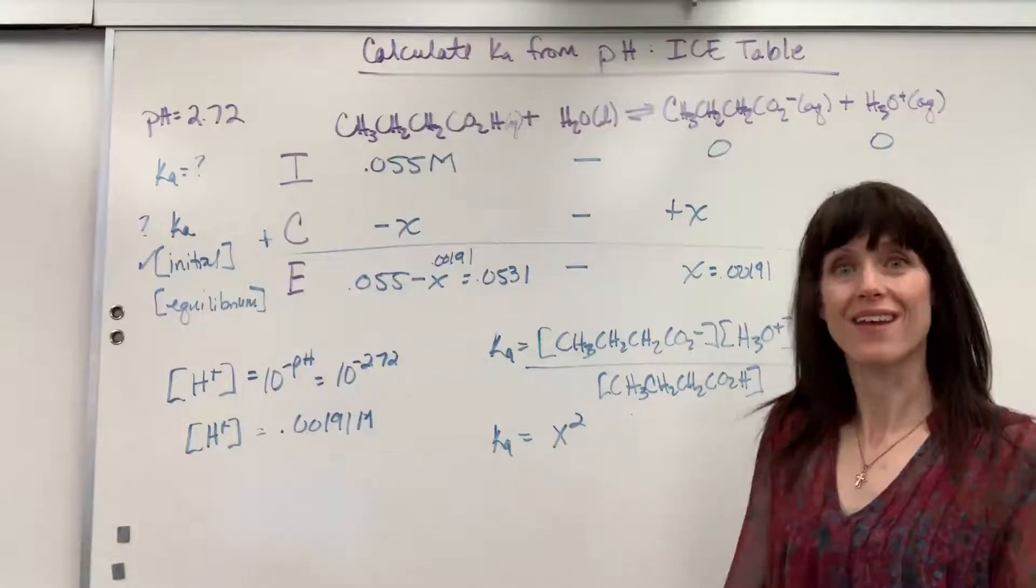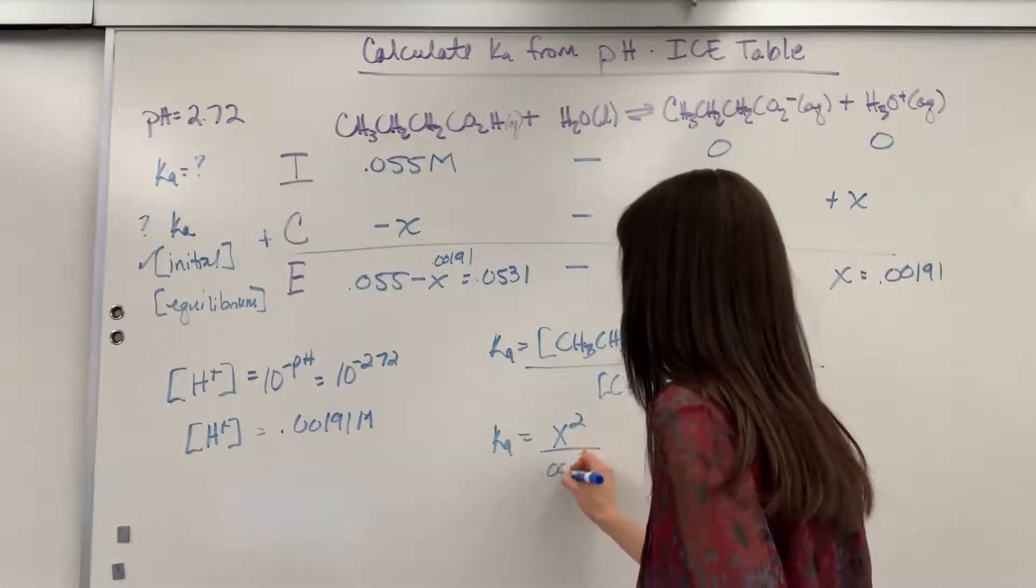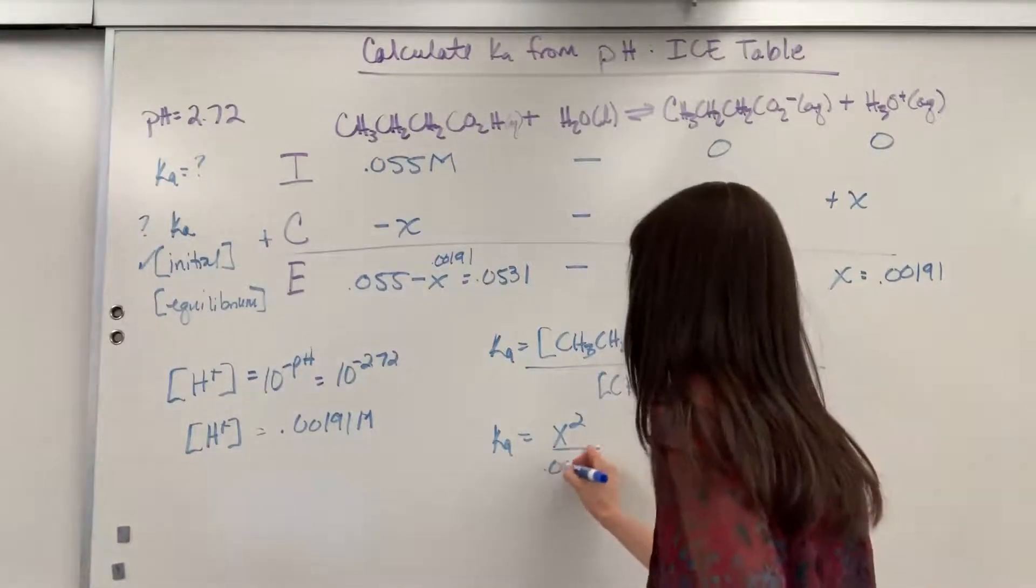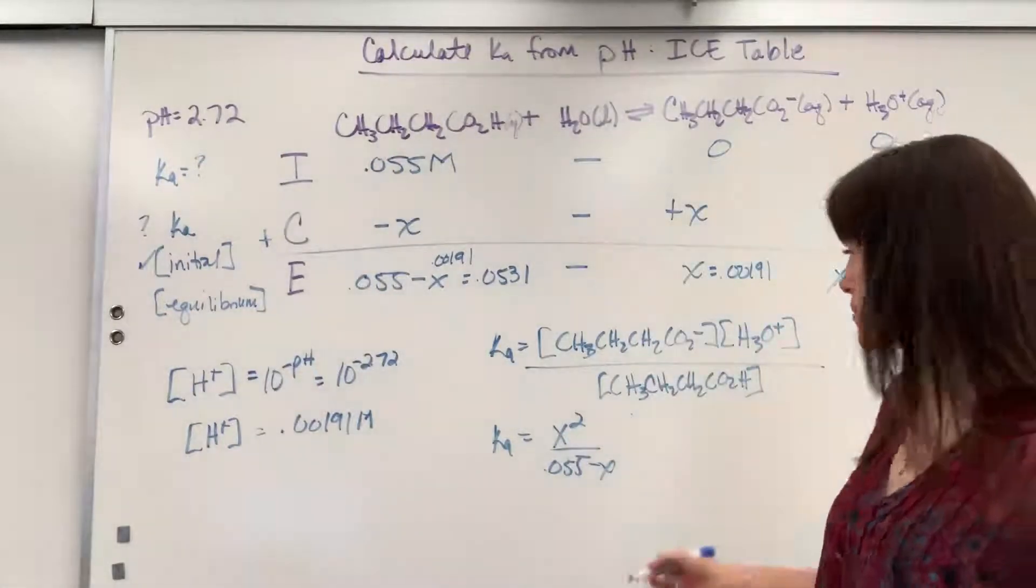This is going to be X times X. X squared. Right? X times X. X squared divided by the 0.055 minus X. Now we plug in those numbers.